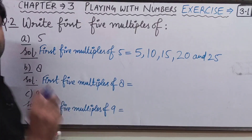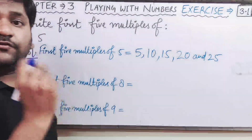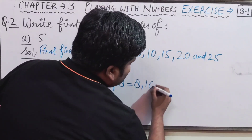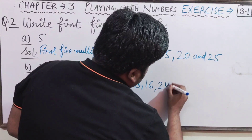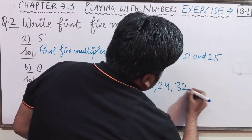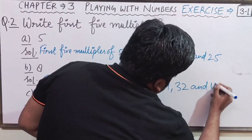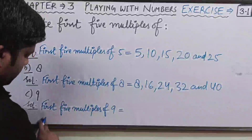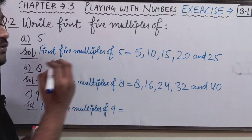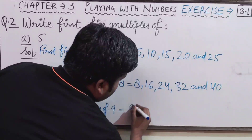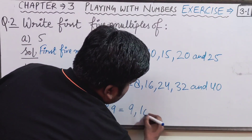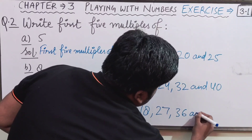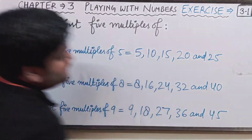First five multiples of 8: 8 × 1 = 8, 8 × 2 = 16, 8 × 3 = 24, 8 × 4 = 32, and 8 × 5 = 40. First five multiples of 9: 9 × 1 = 9, 9 × 2 = 18, 9 × 3 = 27, 9 × 4 = 36, and 9 × 5 = 45.